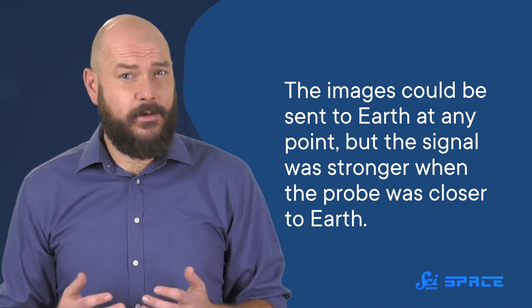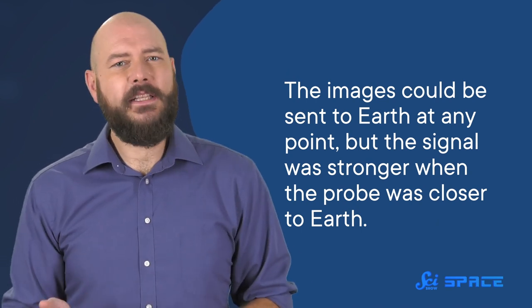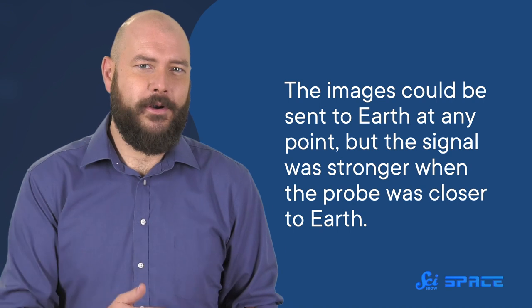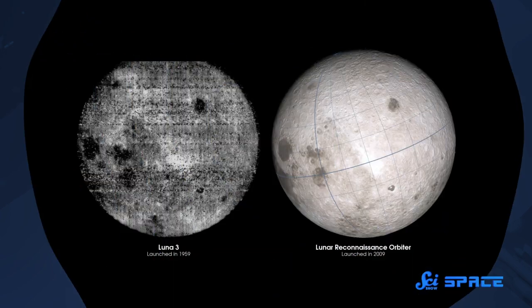Now, the images could be sent to Earth at any point, but the signal was stronger when the probe was closer to Earth. Today, scientists think the partial images that were received on Earth were a result of Luna 3 being so far away.